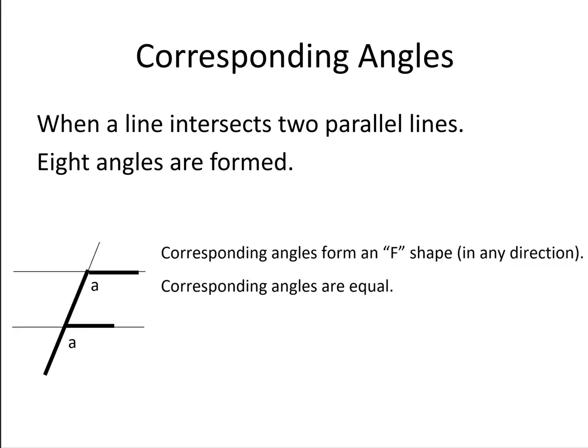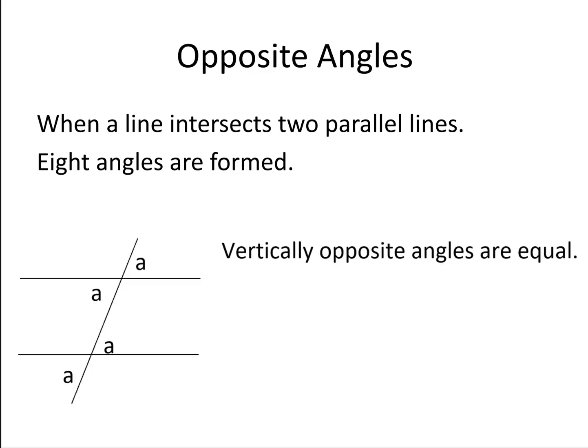Corresponding angles form an F shape, again in any direction—it might be a backwards F, for example. And corresponding angles are also equal.